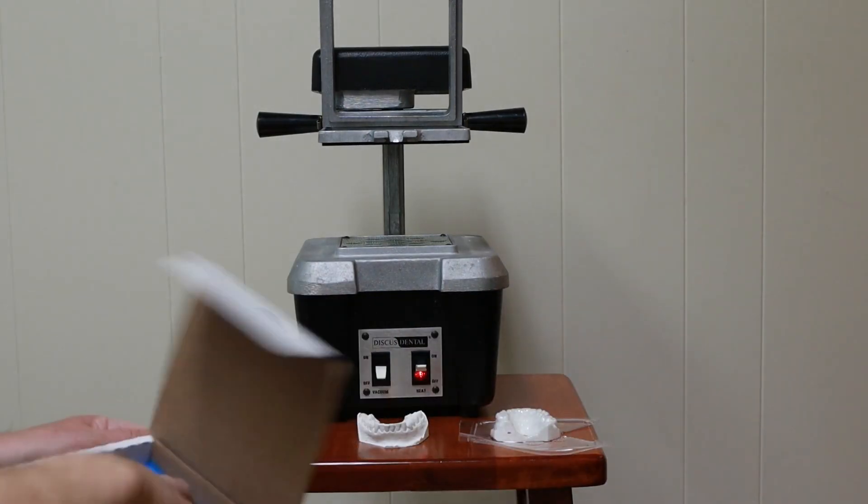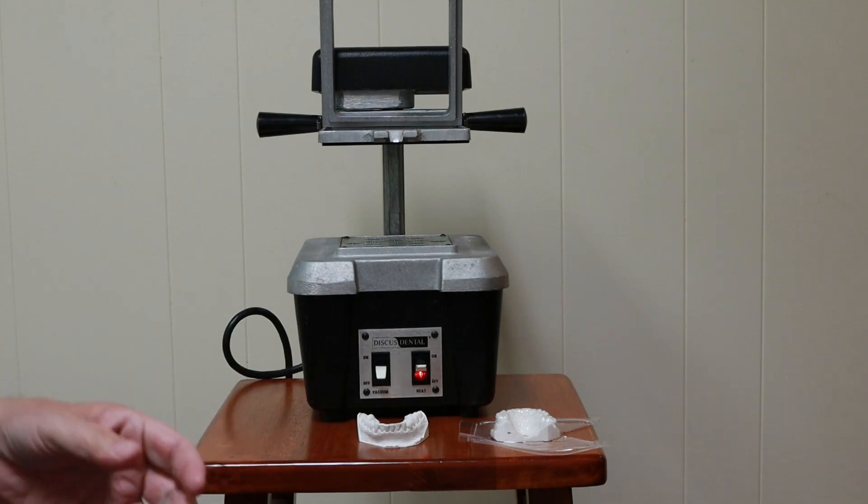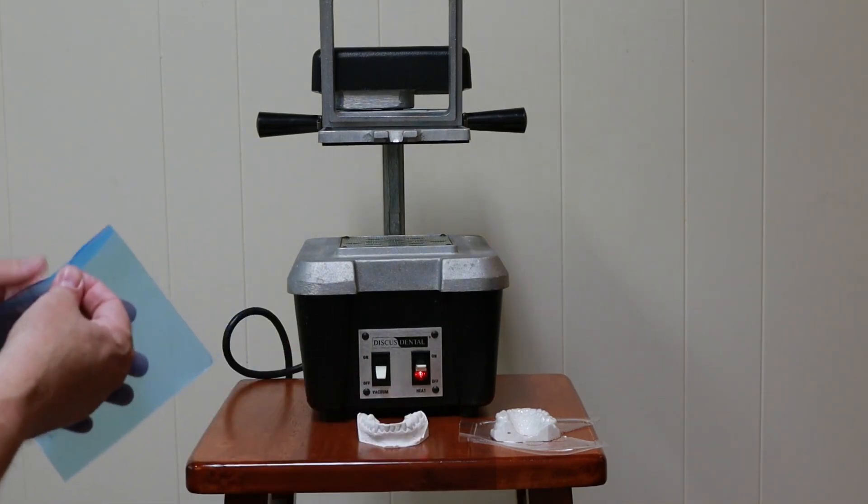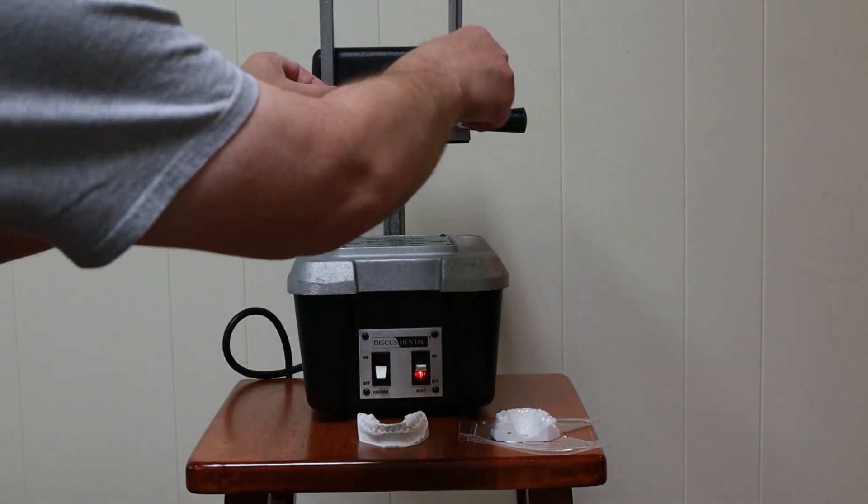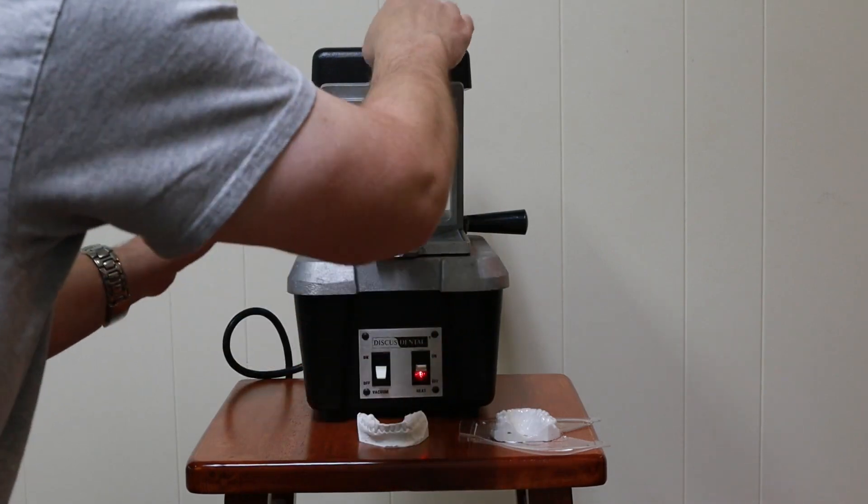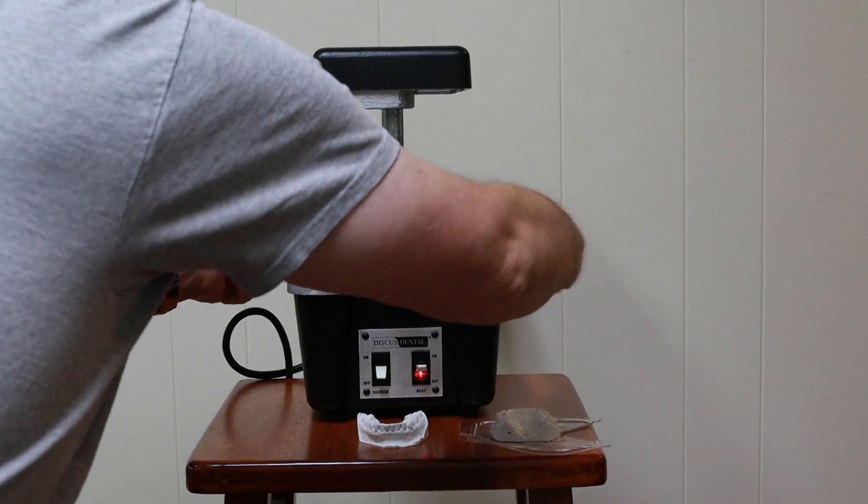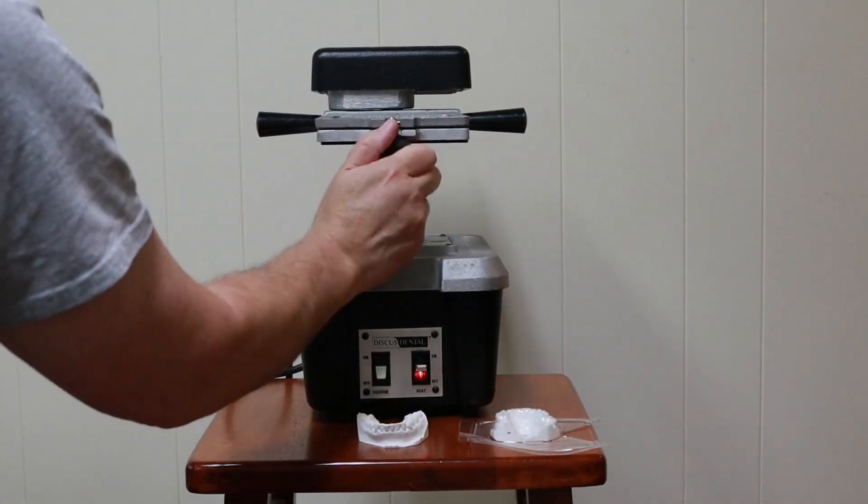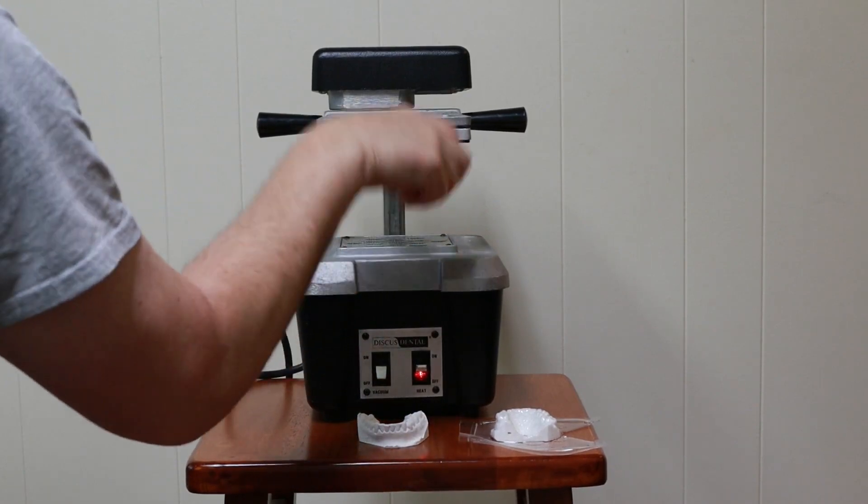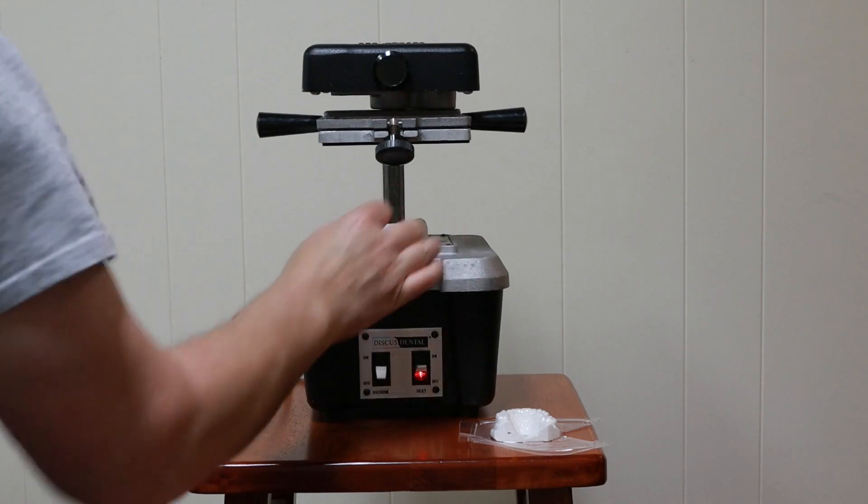Let's get another sheet out of the package. Lock it in place. Rotate the heat source. Place the model underneath.